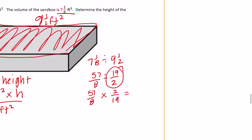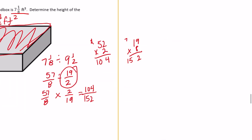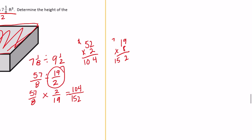57 times 2 is 114, and 8 times 19 is 152. So we get 114 over 152. Let's reduce that.